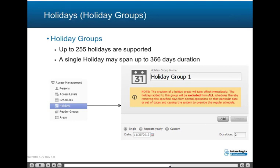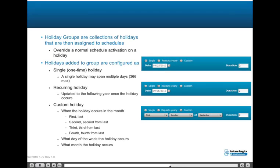A holiday group allows up to 255 holidays. A single holiday may span up to 366 days in duration. Holiday groups are collections of holidays that are then assigned to schedules; holidays override a normal schedule activation on a holiday. Holidays added to a group may be configured as a single one-time holiday (possibly spanning multiple days up to 366 days), a recurring holiday (updated to the following year once the holiday occurs), or a custom holiday where configuration includes when the holiday occurs in the month (first, last, second, second-from-last, third, third-from-last, fourth, fourth-from-last), what day of the week, and what month.